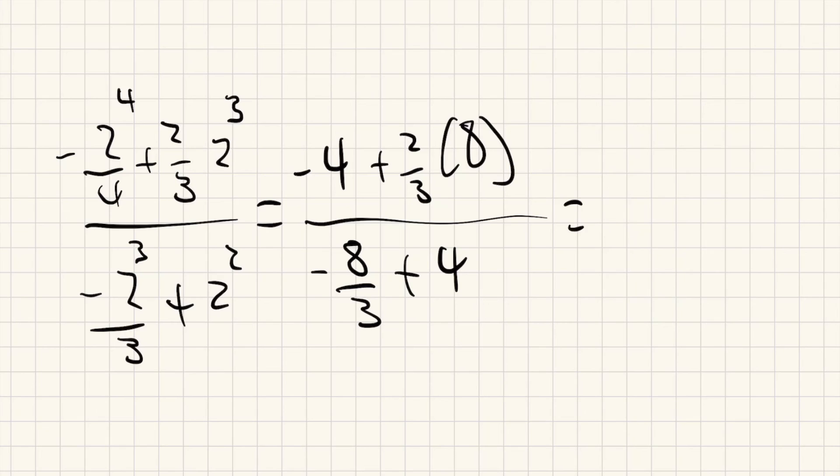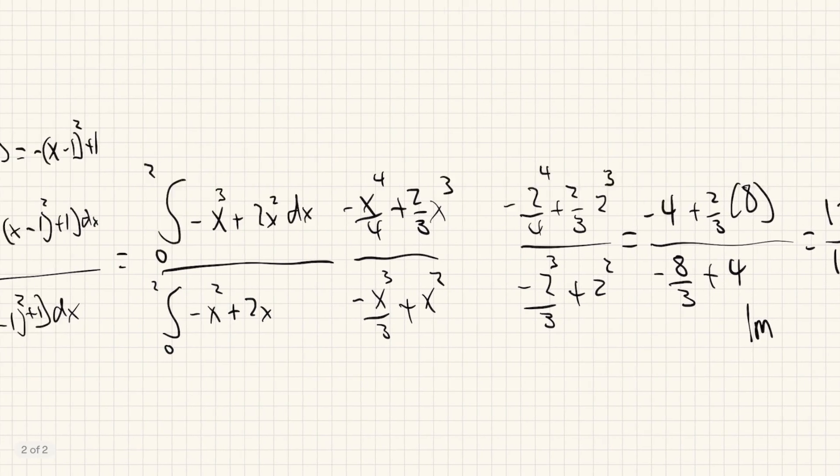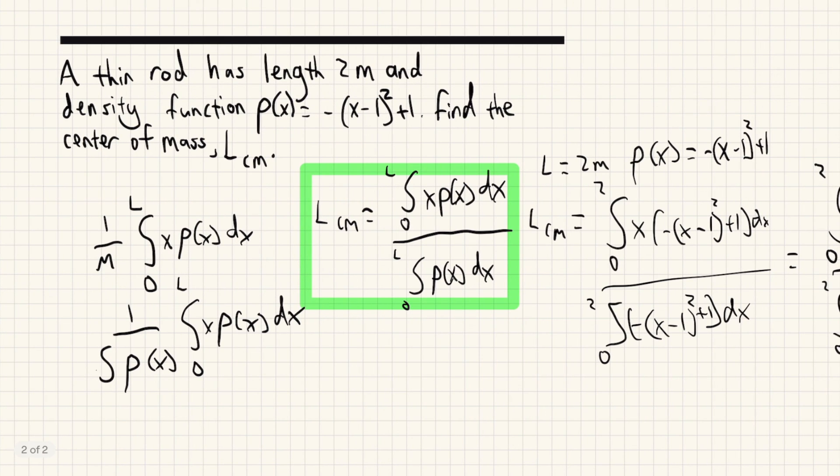So that's just going to simplify down into 1 and 1/3 divided by 1 and 1/3, which is 1. So our answer is 1 meter. And 1 meter out of 2 meters, that's exactly halfway.